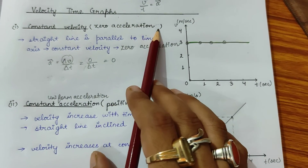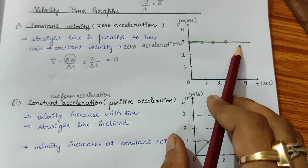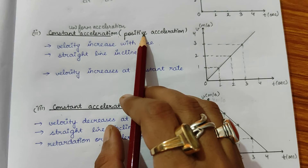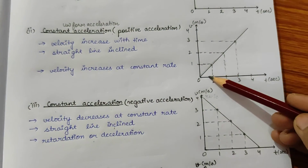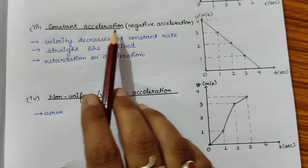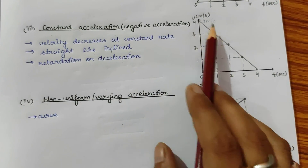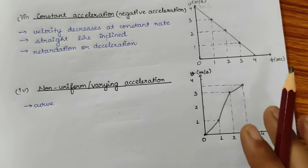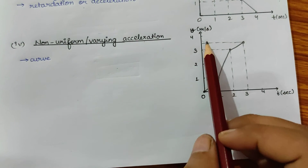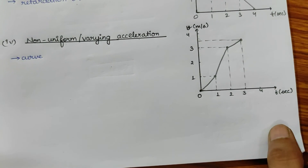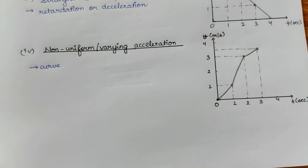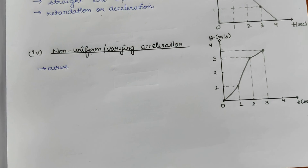To summarize: the first case was constant velocity, or zero acceleration — the graph is a straight line parallel to the time axis. Second was constant positive acceleration — a straight line inclined to the time axis. Third was constant negative acceleration, or retardation — again an inclined straight line. Last is non-uniform or varying acceleration — the graph is a curve, because the body has unequal velocities in equal intervals of time.